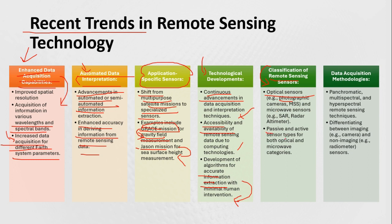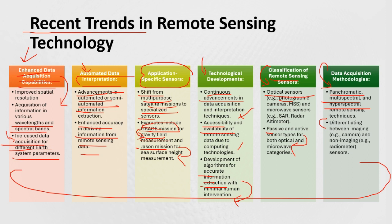There are also passive and active types of sensors in both optical and microwave categories. For data acquisition from the earth's surface, different sensor types are used: panchromatic, multi-spectral, and hyperspectral remote sensing techniques, as well as imaging cameras and non-imaging radiometers. Present-day improvements span image acquisition, application-based development, and integration with AI and ML.